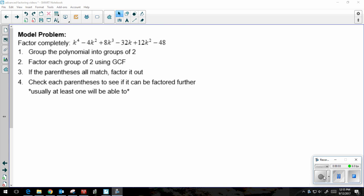Let's take a look at some advanced factoring. This says factor completely k to the fourth minus 4k squared plus 8k cubed minus 32k plus 12k squared minus 48. So there's a lot of terms there and a lot of things going on.